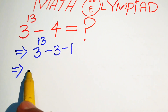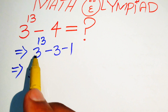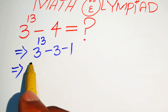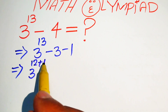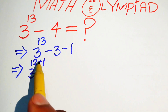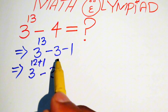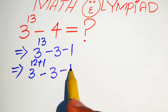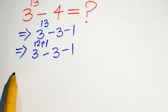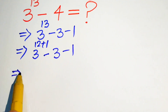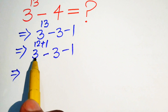Now we focus on the exponent of this term. The exponent is 13, and we break it and write it as 12 plus 1, because we know that 12 plus 1 becomes 13. And this gives us 3 to the power of 12 plus 1, and minus 3 minus 1.